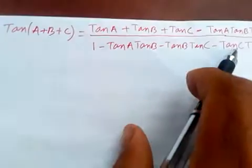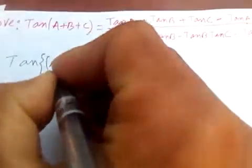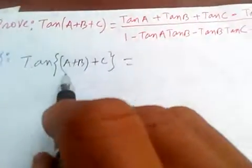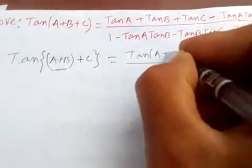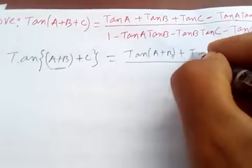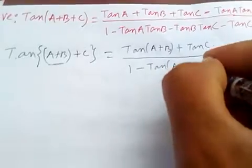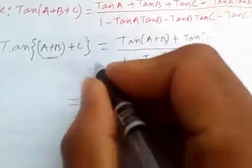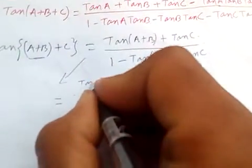Let's take this as (A+B) plus C. We know tan(A+B) is equal to tan A plus tan B over 1 minus tan A·tan B. So we can apply the tan addition formula by treating (A+B) as a single unit and simplifying further.